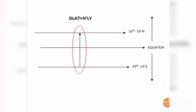In the diagram, the equator is the center line: above it is the northern hemisphere and below it is the southern hemisphere. The place of origin is 20 degrees 15 minutes south and the place of arrival is 10 degrees 10 minutes north.